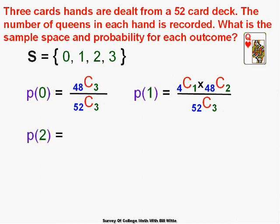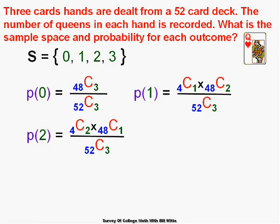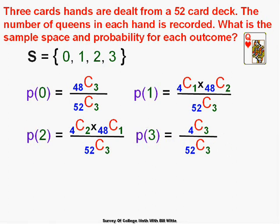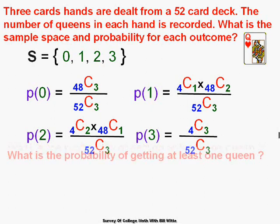For the probability of exactly two queens: the sample space is the same C(52,3). We need C(4,2) ways to choose two queens from four, times C(48,1) ways to choose the one remaining non-queen card, all divided by C(52,3). For exactly three queens: C(4,3) ways to choose three queens from the four, divided by C(52,3).